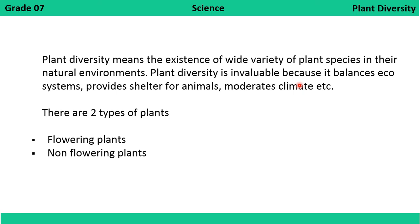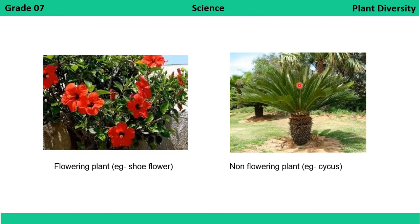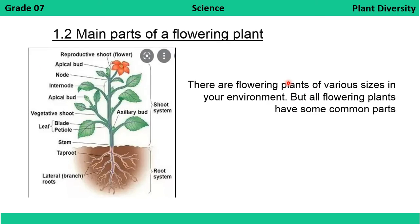All the parts of a flowering plant are the same. According to the feature of whether the plant produces flowers or not, they are divided into two groups: flowering plants and non-flowering plants. The shoe flower plant is a good example of a flowering plant, and cycus is an example of a non-flowering plant.